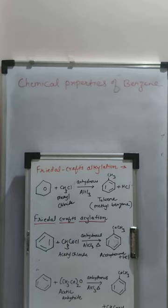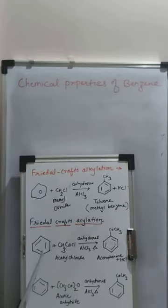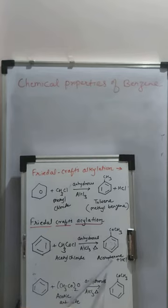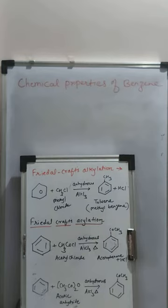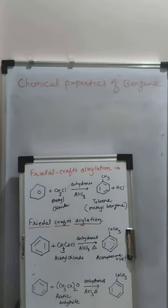In Friedel-Crafts acylation: when benzene is heated with acetyl chloride in the presence of anhydrous AlCl3, there is formation of acetophenone. Similarly, when benzene reacts with acetic anhydride in the presence of anhydrous AlCl3, it also gives acetophenone. These are the examples of Friedel-Crafts alkylation and acylation reactions.